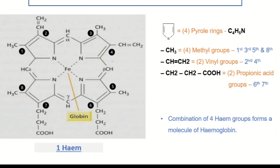The picture shown is not the full structure of hemoglobin — it is the structure of heme. Hemoglobin is a molecule that contains four heme components. Four heme groups together constitute one molecule of hemoglobin. The picture shows one heme molecule; similarly, four heme groups together form a single hemoglobin molecule.